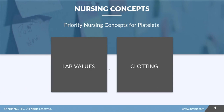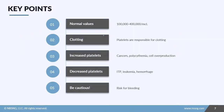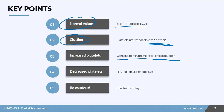Our nursing concepts for this lesson focus on lab values and clotting. Normal platelet values are 100,000 to 400,000 cells per microliter, and platelets are responsible for clotting. Increased platelets can result from cancers, polycythemia vera, or a splenectomy. Decreased platelets are more concerning — causes include ITP, leukemia, and hemorrhage — and these patients are at risk for bleeding. Make sure patients understand their bleeding risk, know when to go to the ER if bleeding won't stop, and review any medications that could cause bleeding issues.